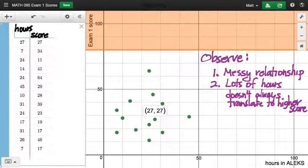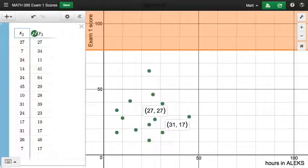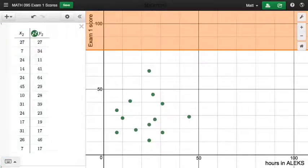So it's not always the case for every pair of points that I pick on here that having more hours spent in ALEKS gives you a higher exam score. But it's complicated, right? Because there are some people that did put in more than 27 hours that did have a higher score. So 27, 27 compared to 31, 39, right? So for that pair of points, more hours did correlate to a higher score. So again, it's a messy relationship and it's complicated.